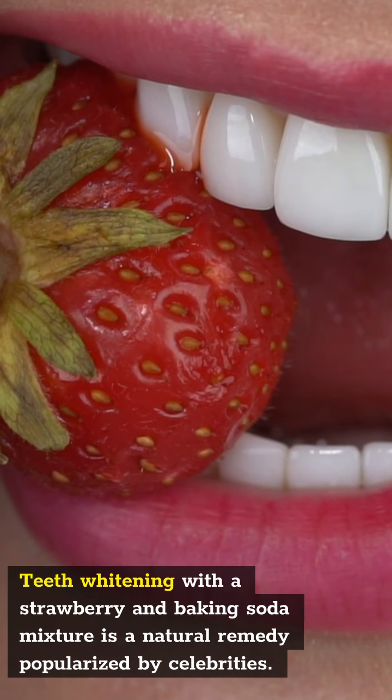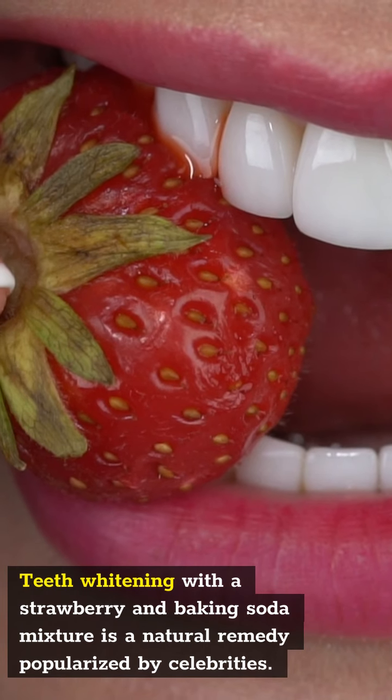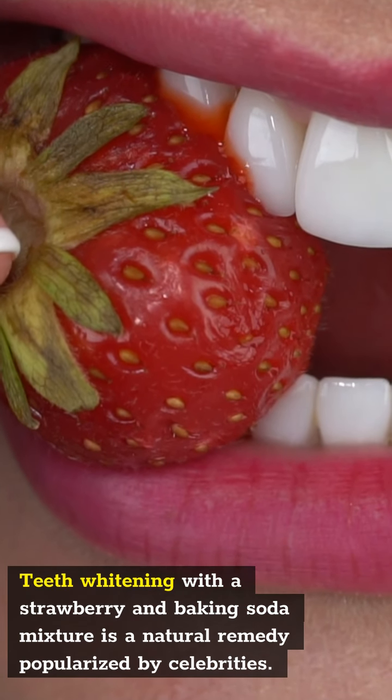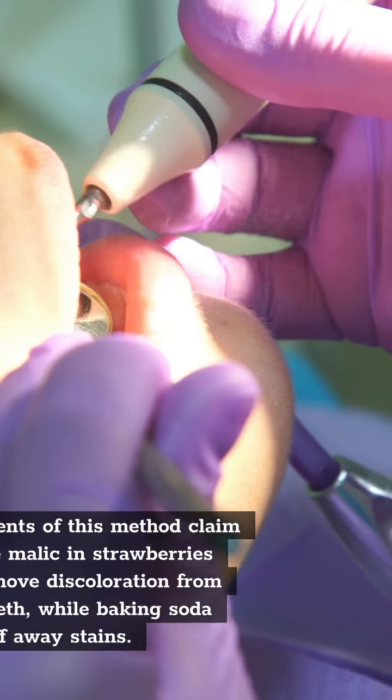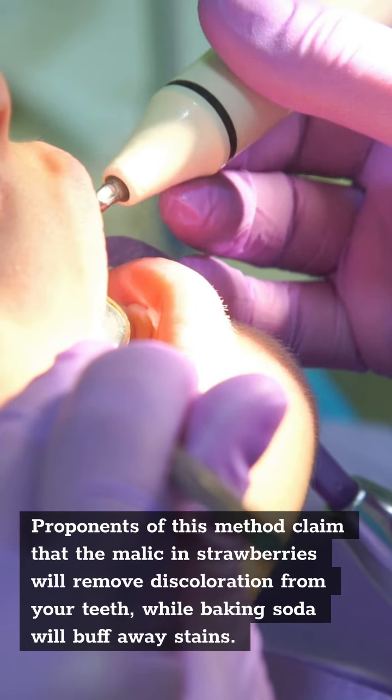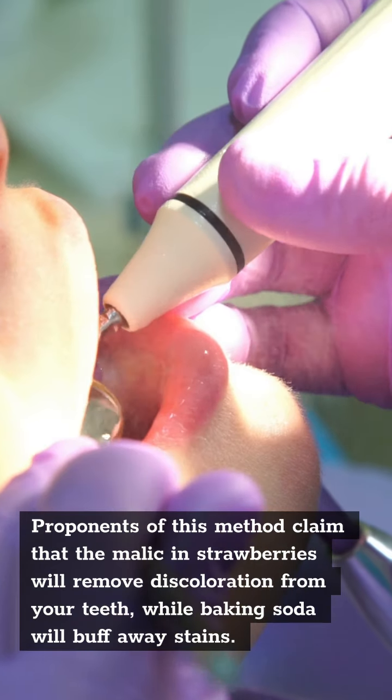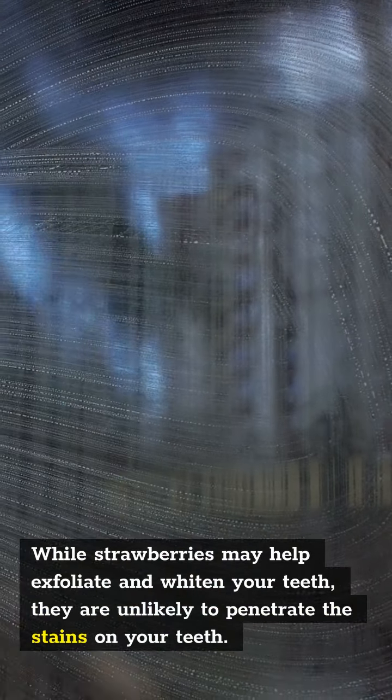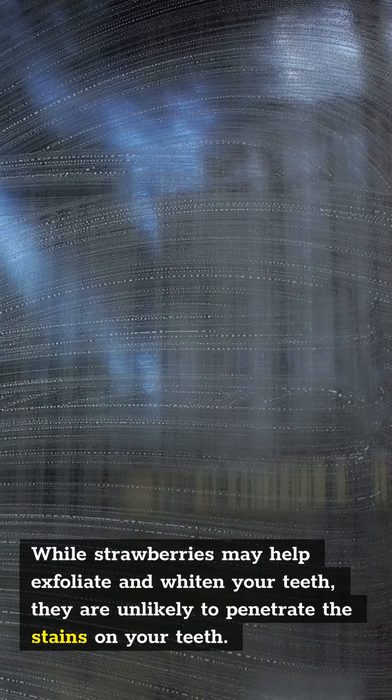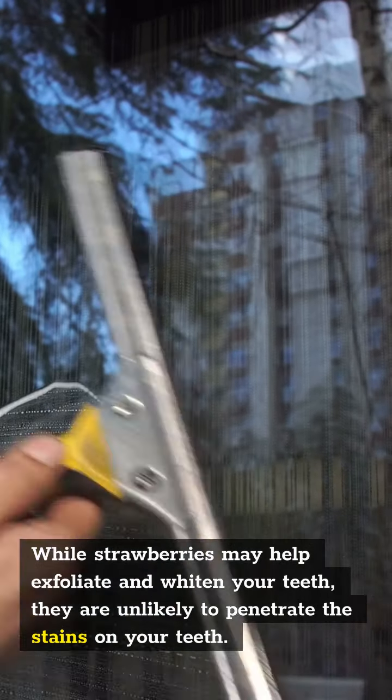Teeth whitening with a strawberry and baking soda mixture is a natural remedy popularized by celebrities. Proponents of this method claim that malic acid in strawberries will remove discoloration from your teeth, while baking soda will buff away stains. While strawberries may help exfoliate and whiten your teeth, they are unlikely to penetrate the stains on your teeth.